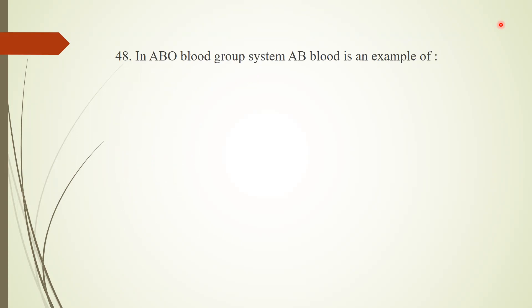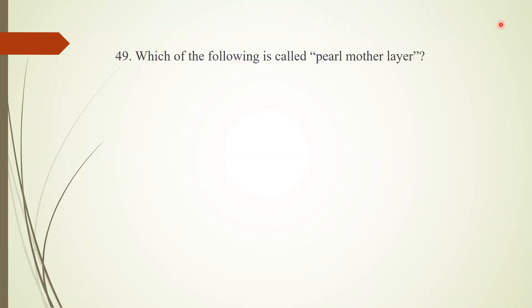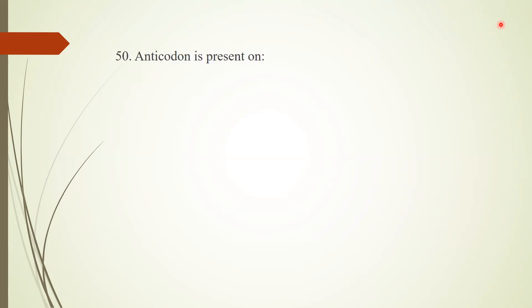Question 48: In the ABO blood group system, AB blood is an example of co-dominance, in which both IA and IB alleles exist together. Question 49: Which of the following is called the pearl mother layer in Mollusca? Answer: nacre. Question 50: Anti-codon is present on which type of RNA? Answer: transfer RNA. This anti-codon binds with the codon on the messenger RNA.